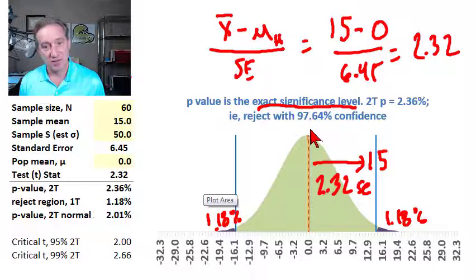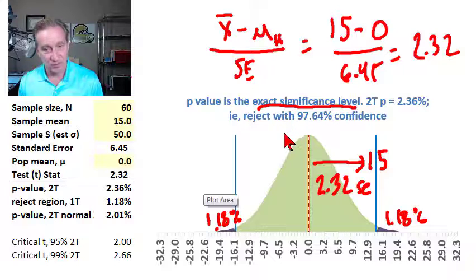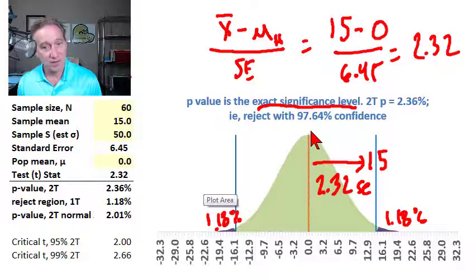And that's another way to interpret the p-value to say that it's an equivalent way. This is the highest confidence level at which we could reject this null. So we were able to reject the null at 95%, but for example,